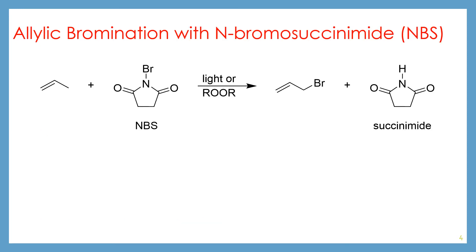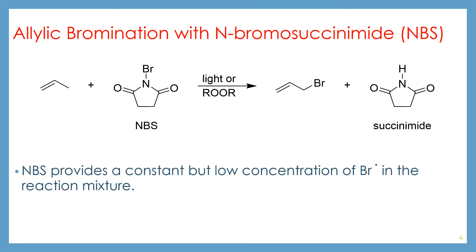Allylic bromination can also be done with a compound called N-bromosuccinimide, which is often shortened as NBS. This is just a much more stable way to produce bromine radical. The NBS provides a constant but low concentration of bromine radical within the reaction mixture instead of adding molecular bromine, which will not form radicals very easily on its own. The initiation of this process looks a little different, but the propagation and the termination is the same.